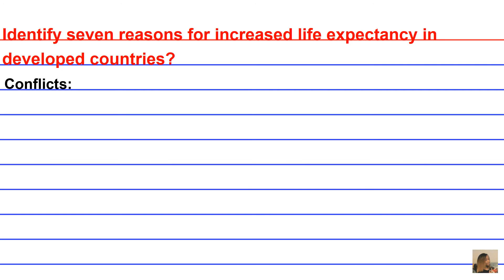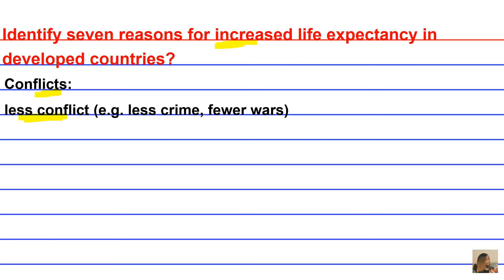The next area relates to conflicts. What about conflicts would increase life expectancy? The answer is less conflict. Although you hear so many things in the news, overall crime has been reduced dramatically, and even though there are wars today, there are way fewer wars compared to past years — maybe almost a century ago.